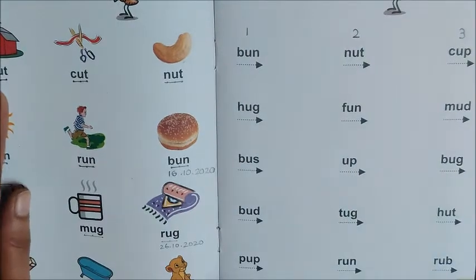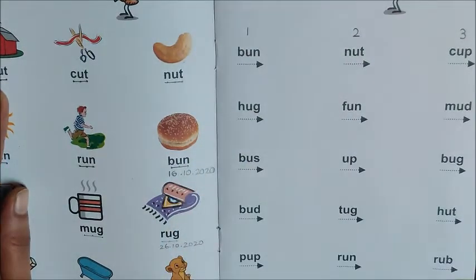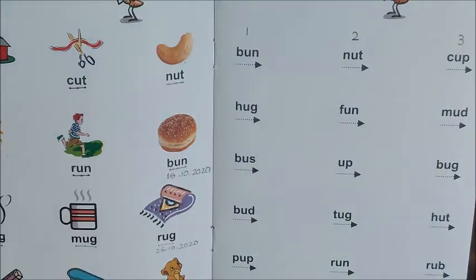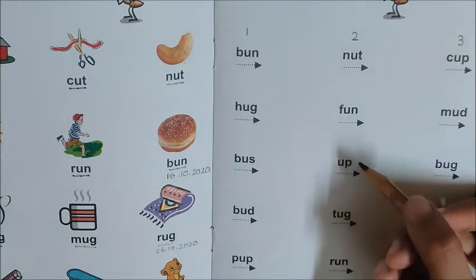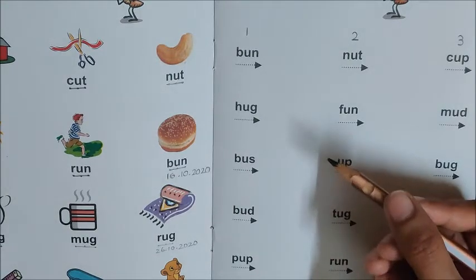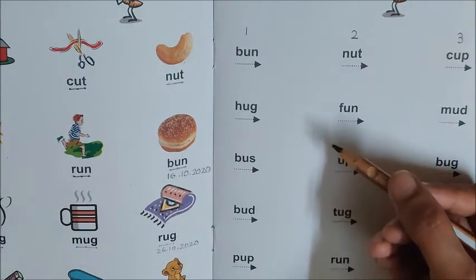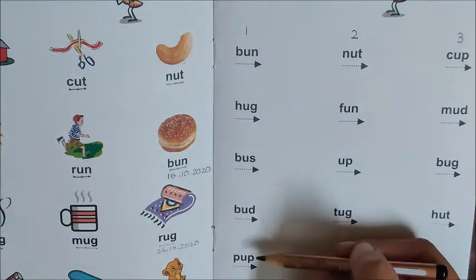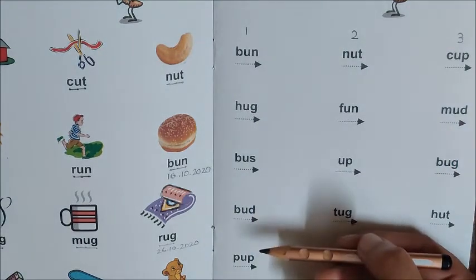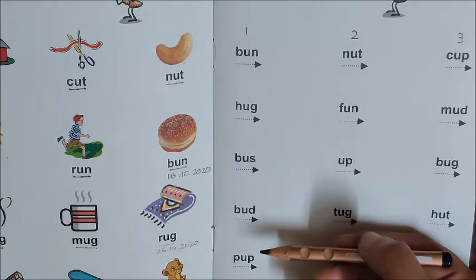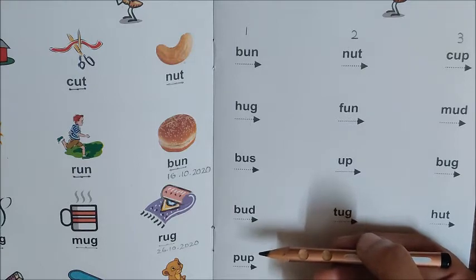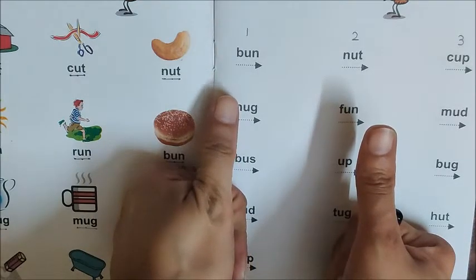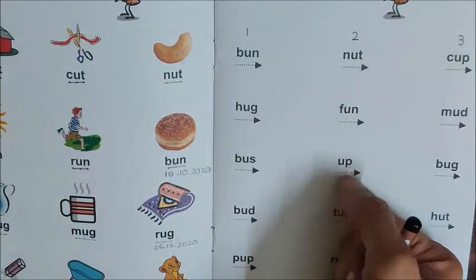Today we will read words in column 1. Children, today I am going to say a word, and you have to look for the word in column 1. And then we will mark the sounds and read that word. Are you ready for this game? So let us begin.